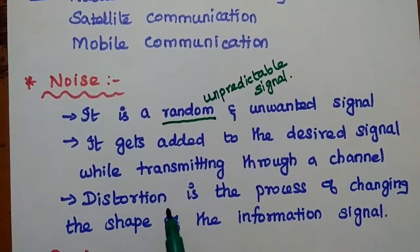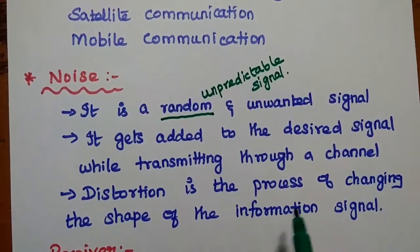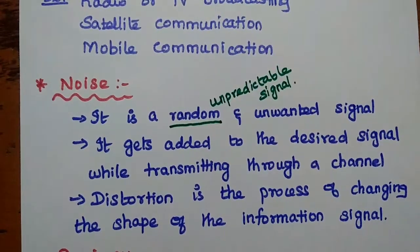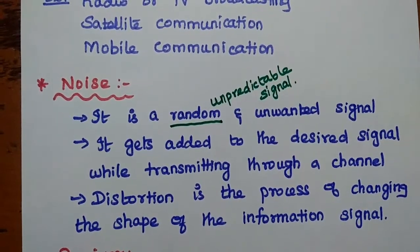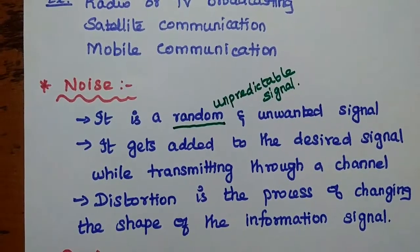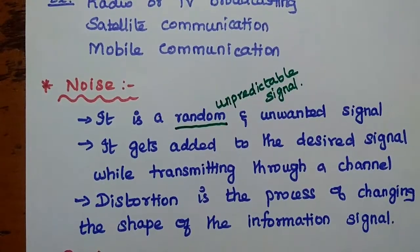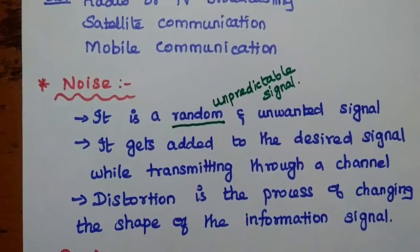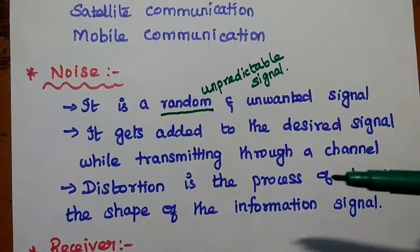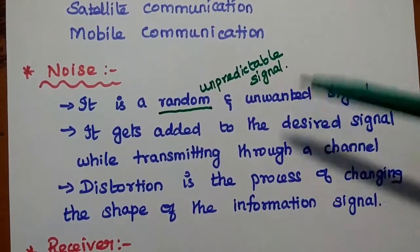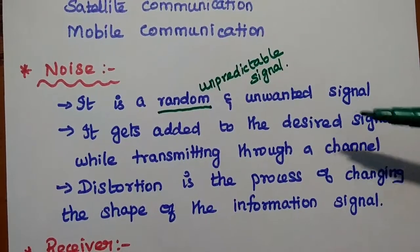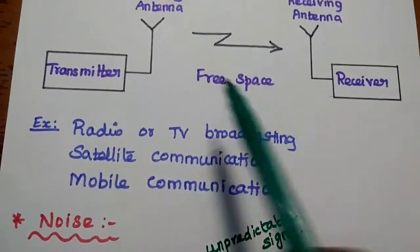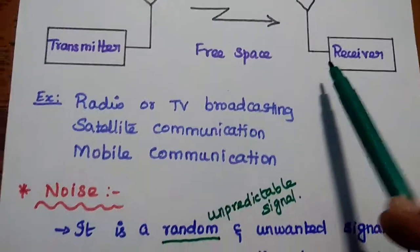We also have distortion. Distortion is the process of changing the shape of the information signal. For example, whenever we are watching TV and a mobile phone nearby starts ringing, its signal strength affects the TV signal — that disturbance causes distortion in the TV signal. So while transmitting through a channel, noise and distortion happen, and at the receiver end we receive the original signal along with the noise signal.